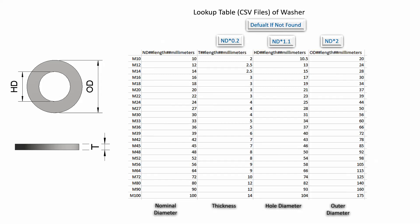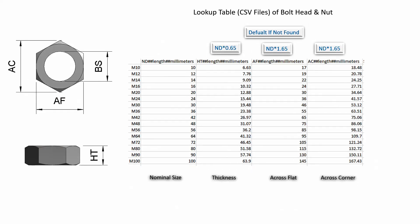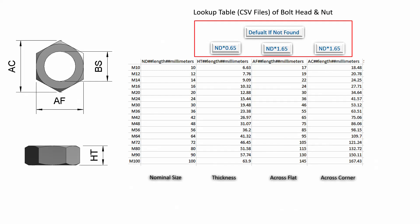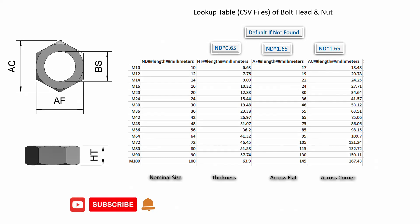I will refer those dimensions in the picture to create the parameters. This is the lookup table CSV file of nut and bolt head. Its data are referred from the manufacturer specifications. I will use this lookup table CSV file to create the parametric family. There are M10 to M100. I will use this formula for default if not found. Before going to Revit, I would like to request you to subscribe to the channel and click the notification bell for the next video. Ok, let's go to Revit.